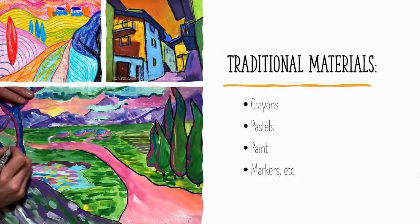Some traditional materials you could choose to use might be anything from crayons, pastels, paint, markers, or color pencils — there are so many different options. In these pictures, starting in the top left you can see crayon, next to that on the top is color pastel, and down the bottom you can see the use of paint and also Sharpie.